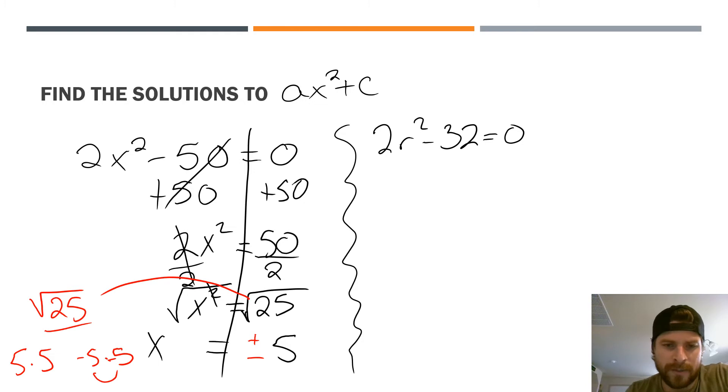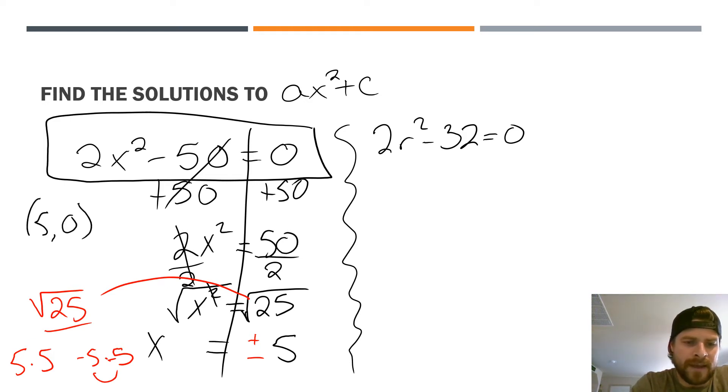So what we've really determined is our solution, which we all know from my previous video, is where the parabola is going to cross the x-axis. If you were to graph this quadratic out, it's going to cross at 5, 0, and negative 5, 0. These are the two solutions to this quadratic.